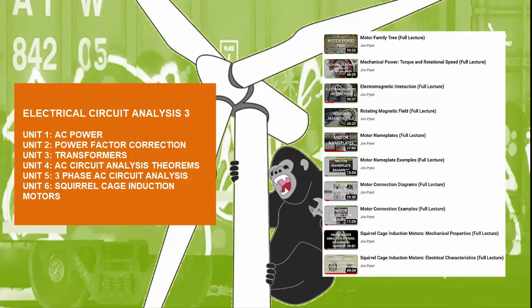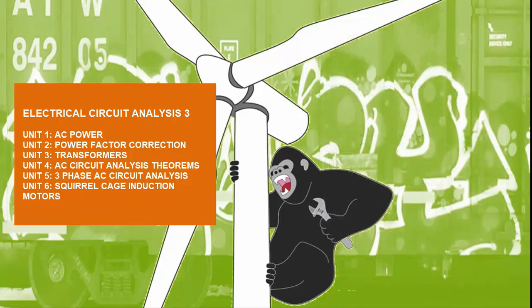Instead, direct your time and energy towards something much more useful: the squirrel cage induction motor. The beginning of the motors and generators playlist discusses important motor properties like torque, speed, and mechanical power, the rotating magnetic field, and moves into introductory lectures on the mechanical and electrical properties of the squirrel cage induction motor. If you are super interested in resonance and filters, I have included supplemental lectures on those topics for those so inclined. This section of material might be typically packaged into a traditional 10 to 12 week academic quarter.